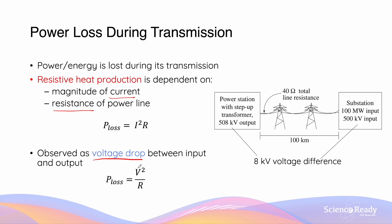We can also use the voltage drop to calculate power loss, where power loss is equal to the square of the difference in voltage between the power station and the substation — that is, our voltage drop — divided by the resistance of the power line. You can use either of the two equations, depending on whether you know the current flowing through the power line, or the voltage drop observed due to the power loss.